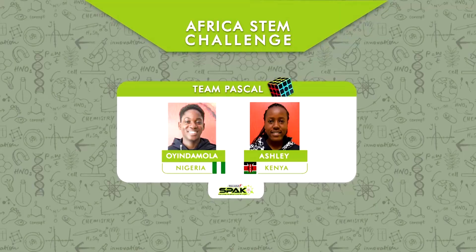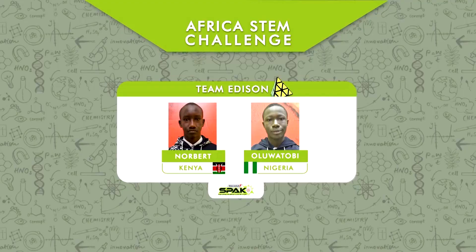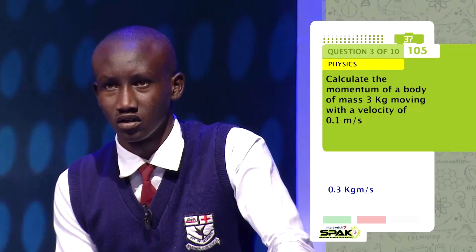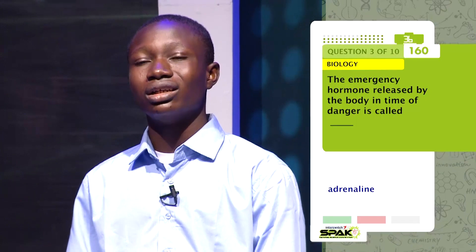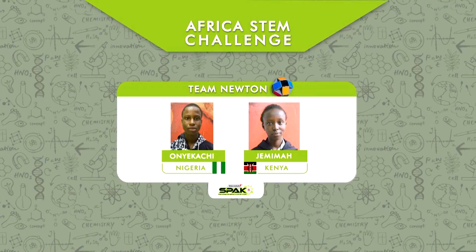The contestants have been grouped into three different teams: Team Pascal, represented by Onyee Damala from Nigeria and Ashley from Kenya; Team Edison, represented by Norbert from Kenya and Oluwatobi from Nigeria; while Team Newton was represented by Onyee Kachi from Nigeria and Jemima from Kenya. Hold on tight to your seats because you're about to experience the Battle of Science Champions, starting with the Foundation Round.